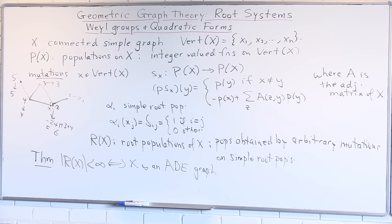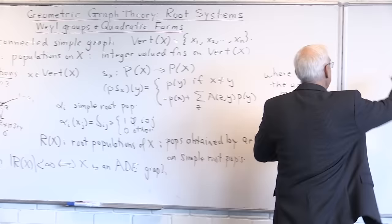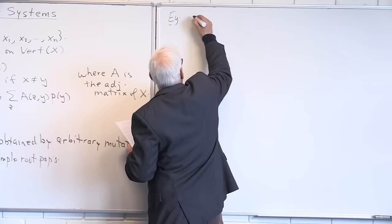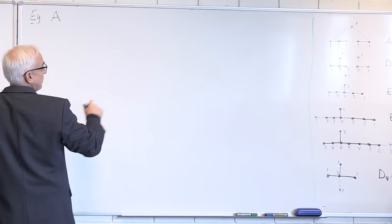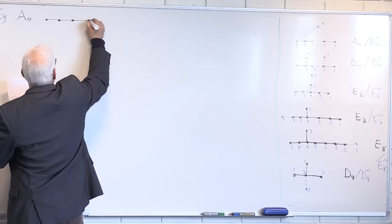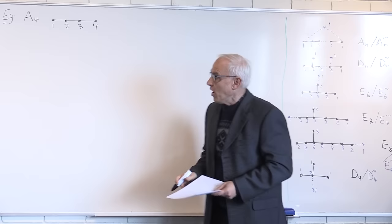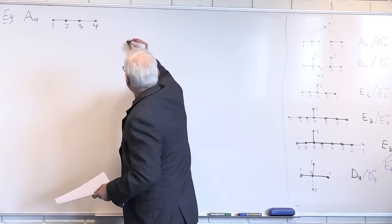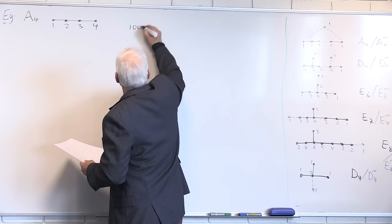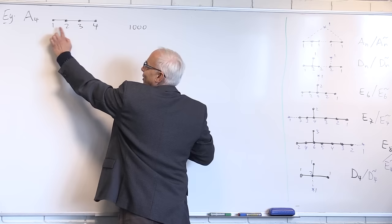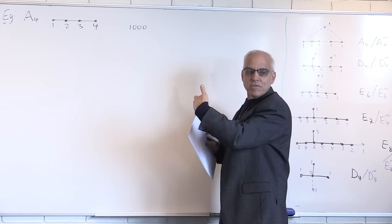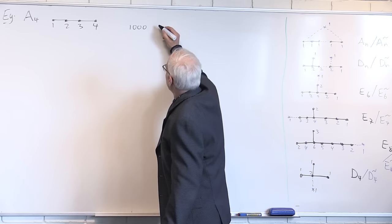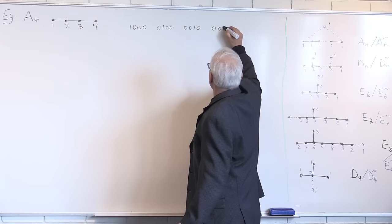Let's look at some root populations as a reminder. Suppose we start with A4 — the graph whose nodes we label 1, 2, 3, 4. The simple root populations are the singletons: (1,0,0,0), (0,1,0,0), (0,0,1,0), (0,0,0,1) — those are alpha_1, alpha_2, alpha_3, and alpha_4 respectively.